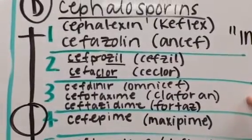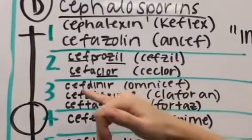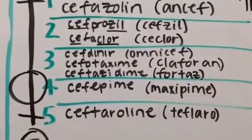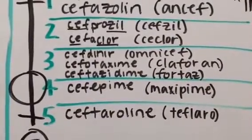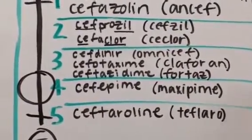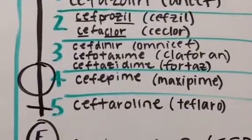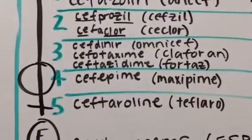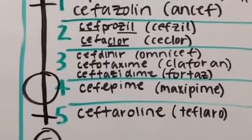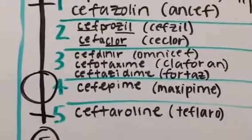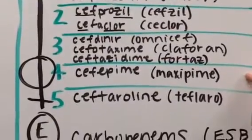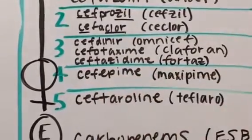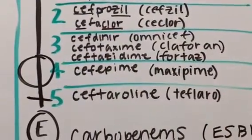For our third generation, we have cefdinir, ceftazidime, cefotaxime, and also ceftriaxone, which I didn't include on the board due to spacing. Our fourth generation focuses mainly on cefepime. And then the fifth generation is ceftaroline.